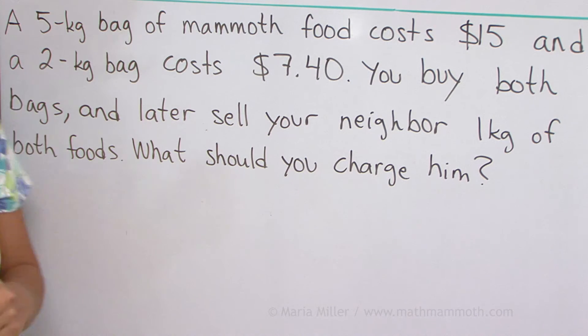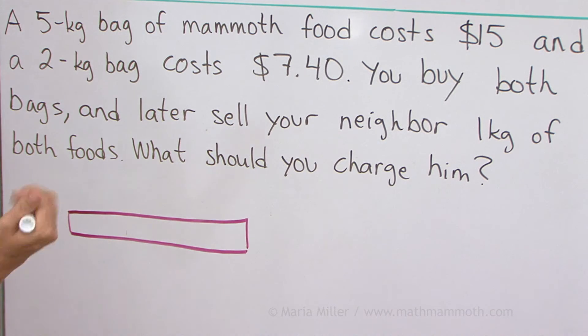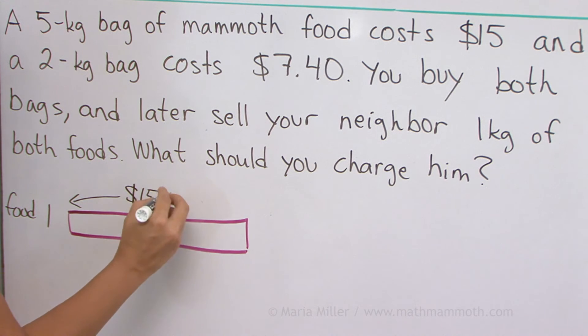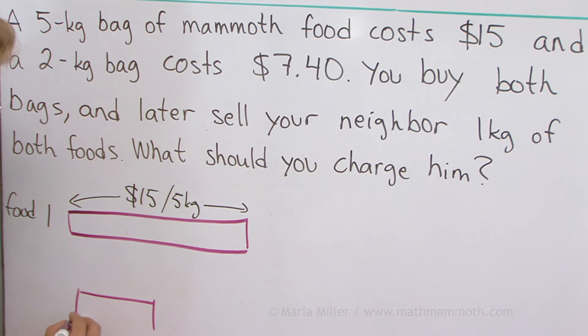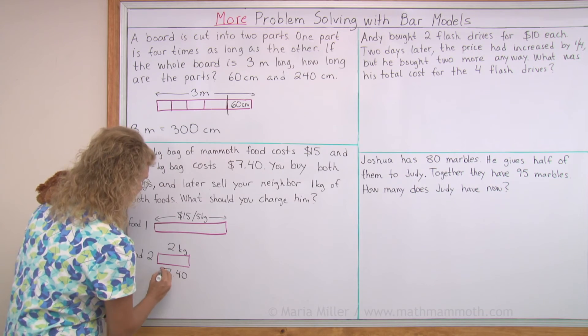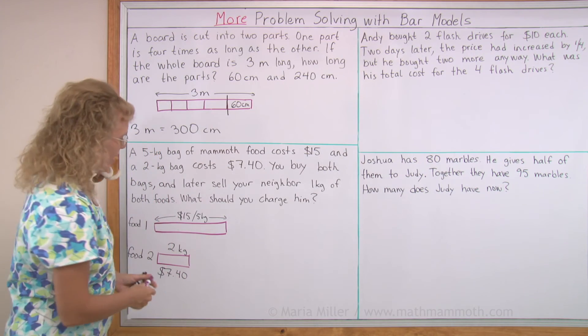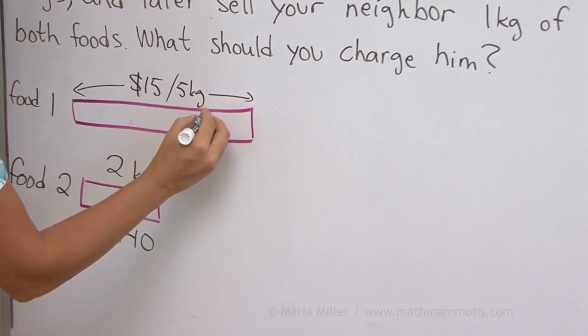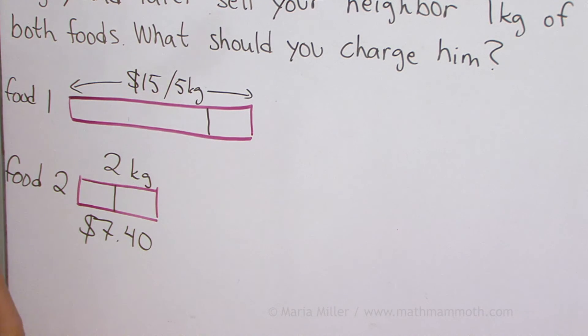I said we would solve this with bar models. I'm going to draw here. This is for the first food. Food one that costs $15 and is five kilograms. So the total is $15 and it's also five kilograms. It's five kilograms in total. The other one is two kilograms. Two kilograms for two. And it is $7.40. You give your neighbor or you sell your neighbor one kilogram. One kilogram from here. One kilogram from here or half of this. How much should you charge him?